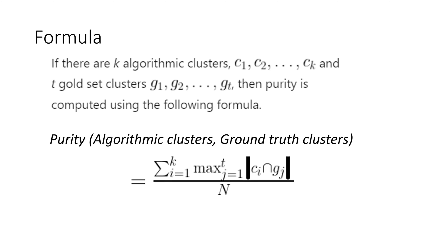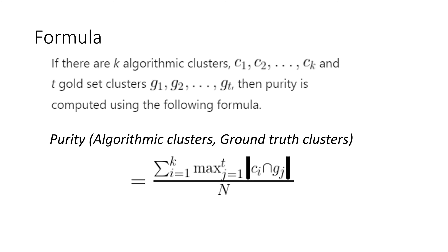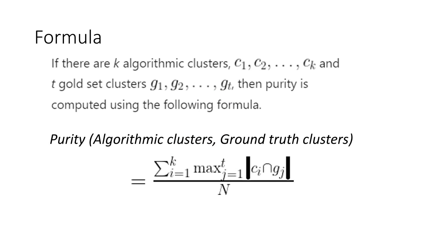Here is the equation for purity. We have k algorithmic clusters c1, c2, up to ck — clusters created by a clustering algorithm such as k-means, hierarchical clustering, or DBSCAN — where each cluster contains indices of the rows of the original data table. The ground truth has t clusters for the same data: g1, g2, up to gt. These are the expected, correct, or benchmark clusters determined in advance, sometimes called the gold standard.